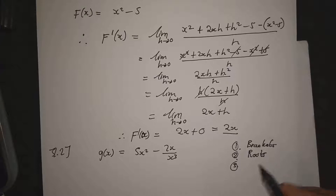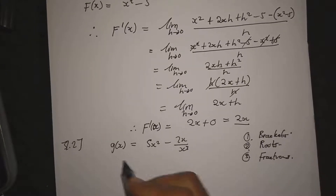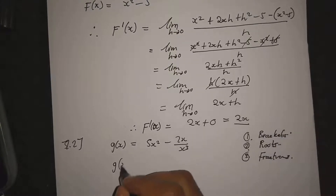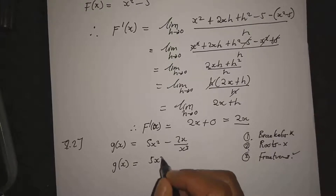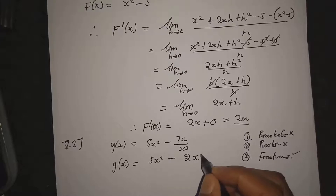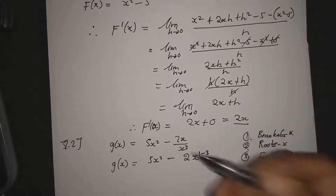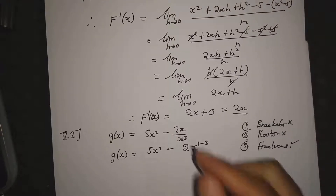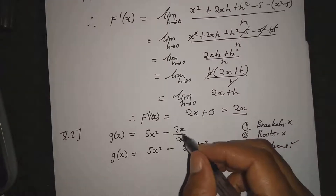We have a fraction here, so we simplify it first before applying differentiation rules. We split the fraction: 5x²/x³ - 2x/x³. Using the exponent law for dividing powers with the same base, we subtract exponents.